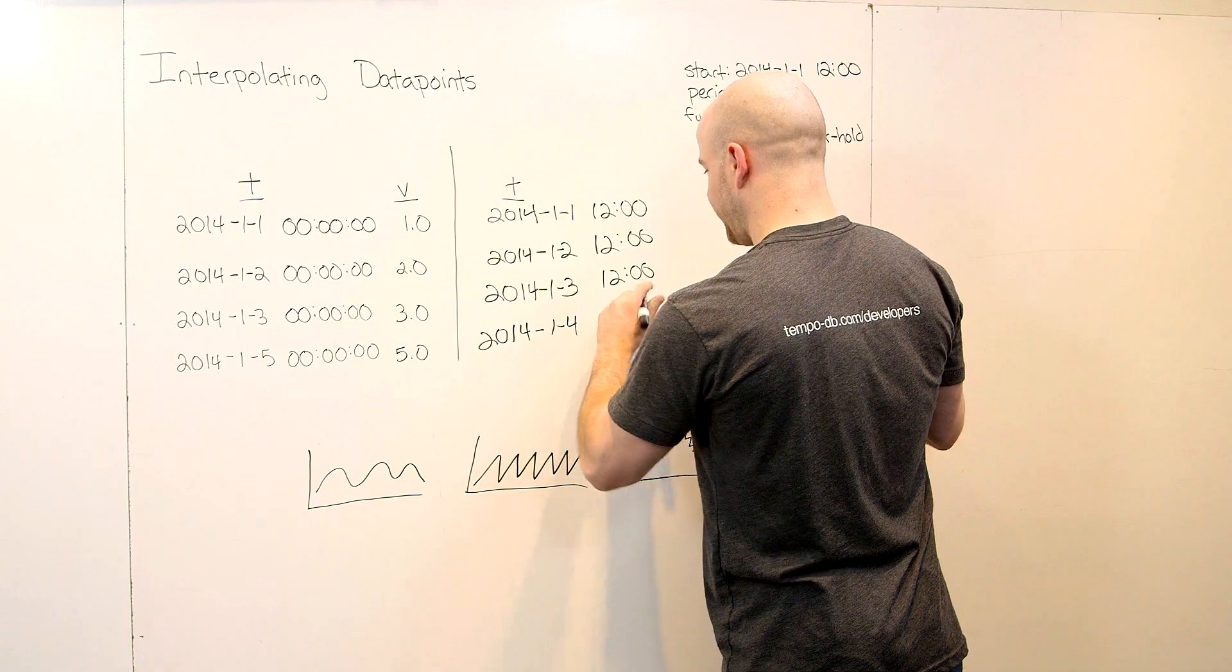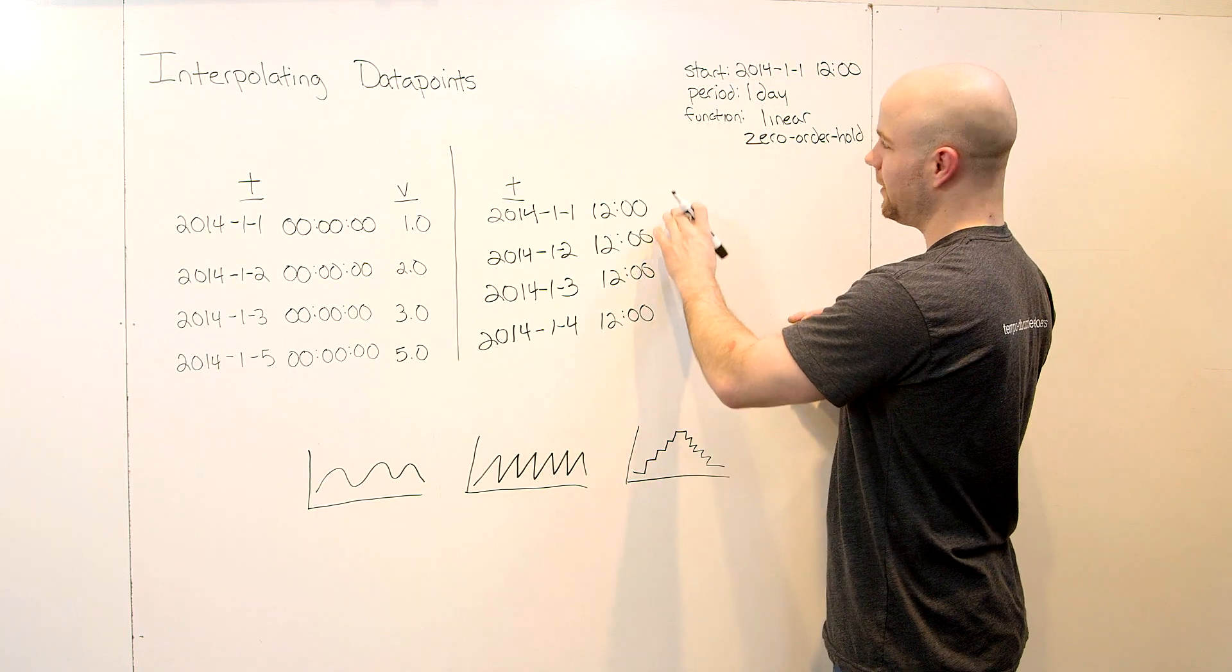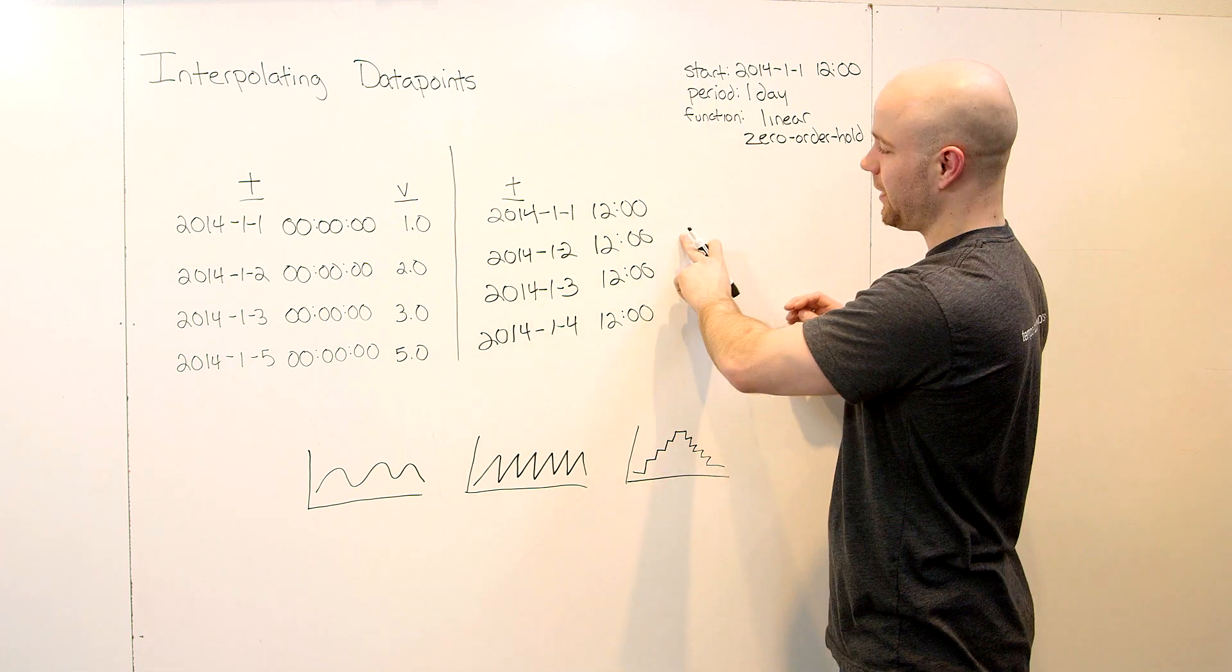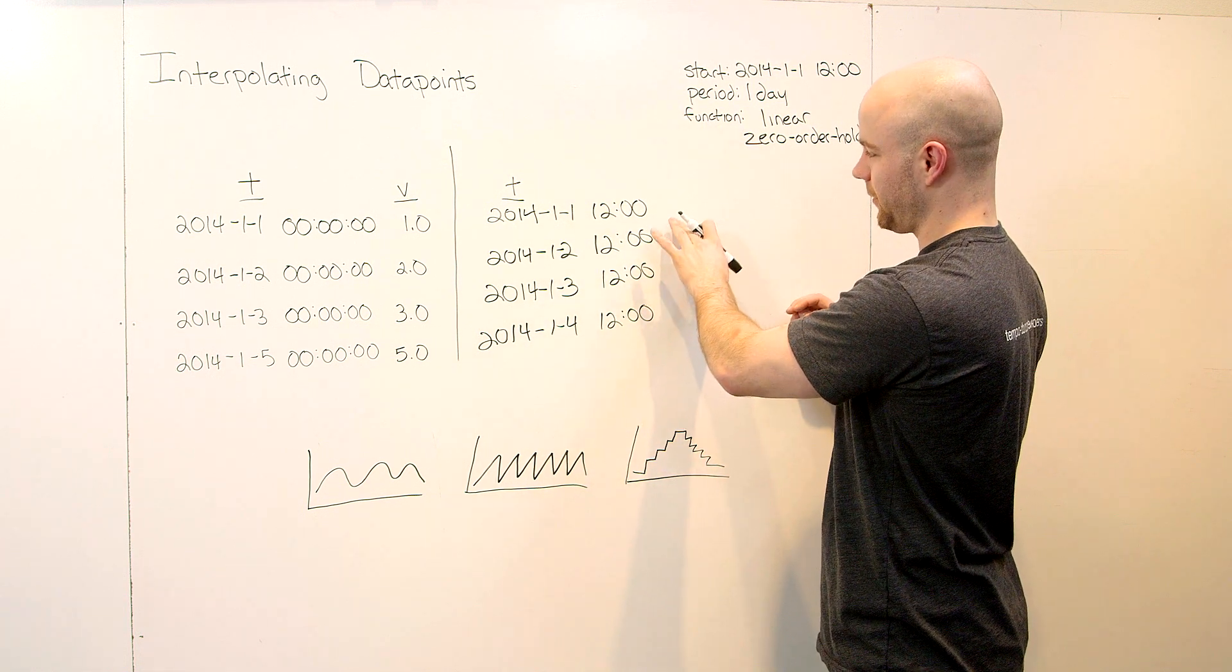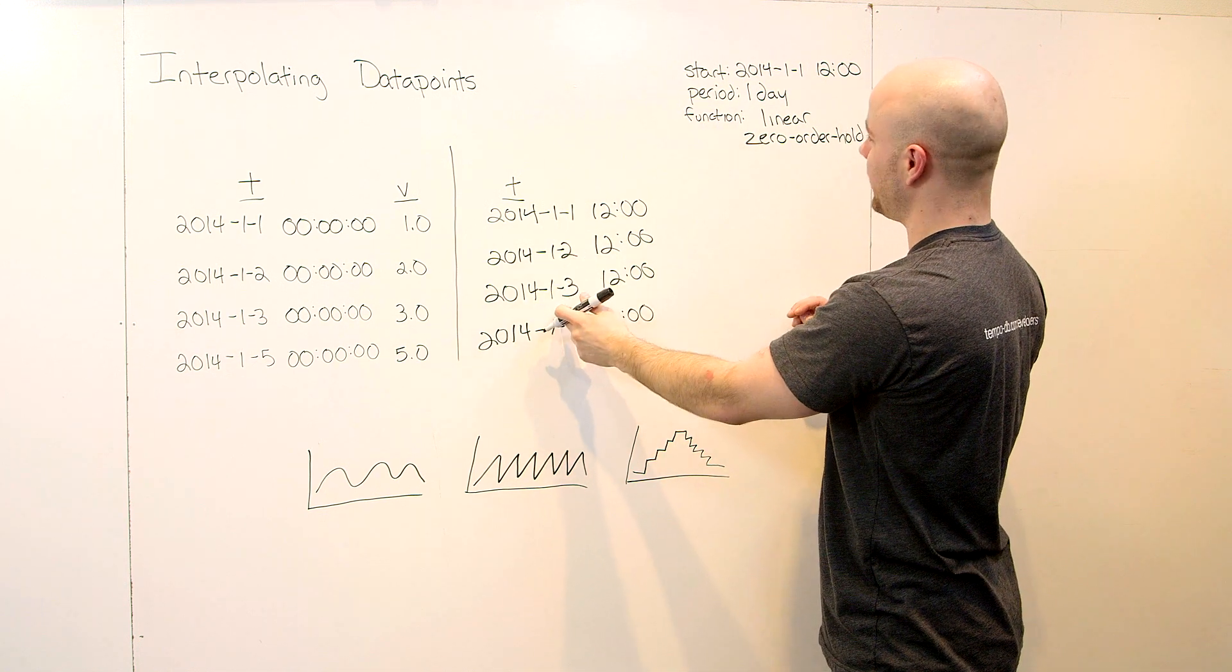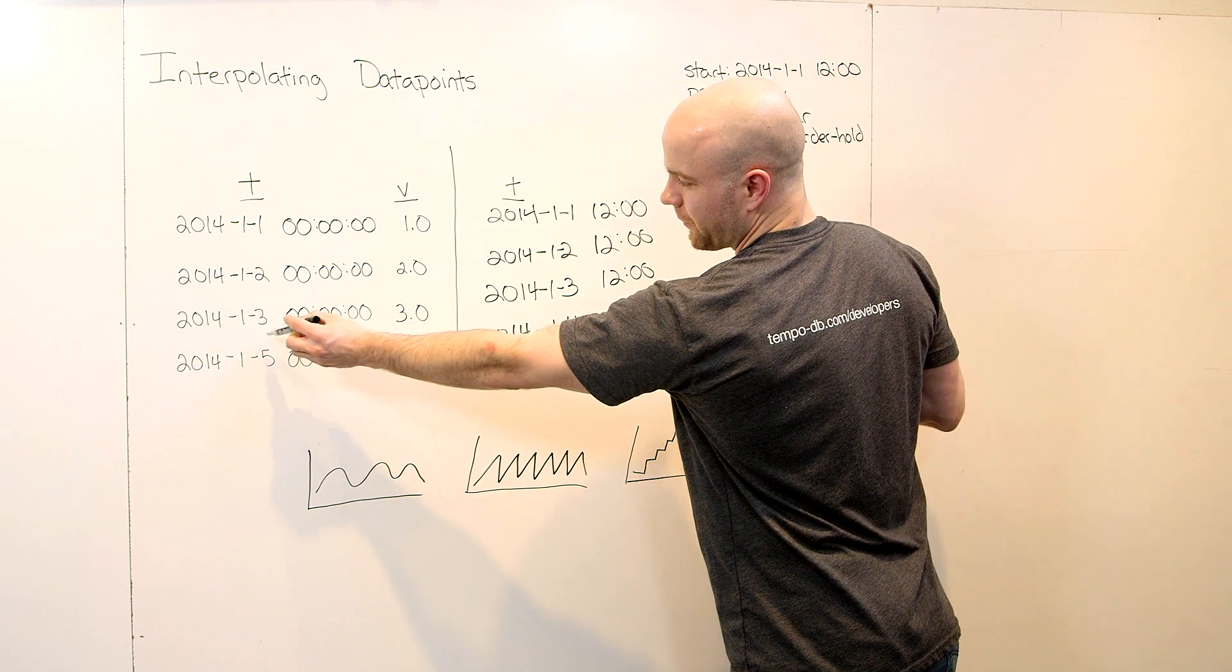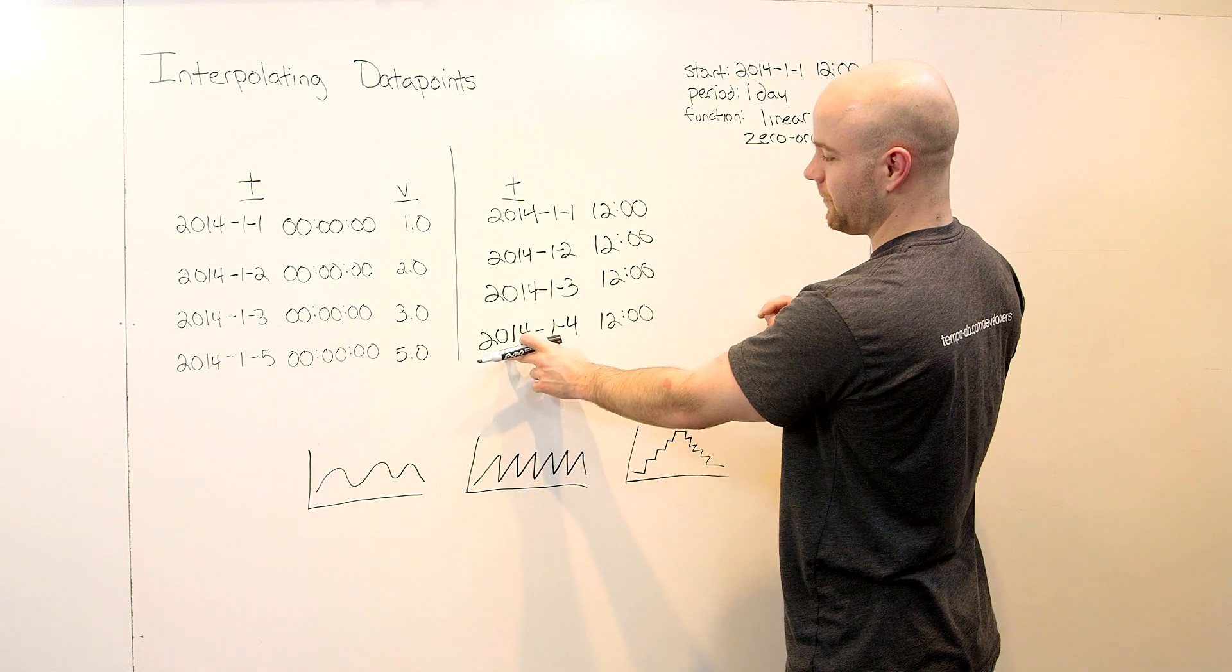The generation of these timestamps illustrates two important things about interpolation. One, you're guaranteed that all of the timestamps in this return set are going to be at the same interval, one day, always evenly spaced. Two, any missing points, like we don't have a point here for the fourth, are going to be filled in for you.